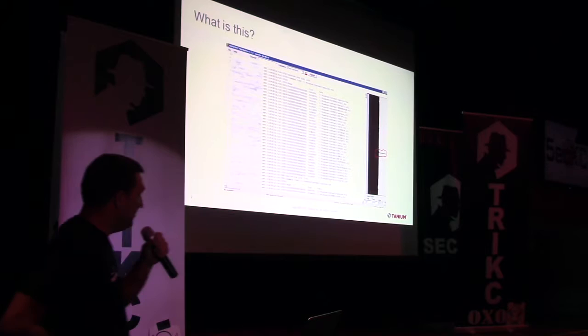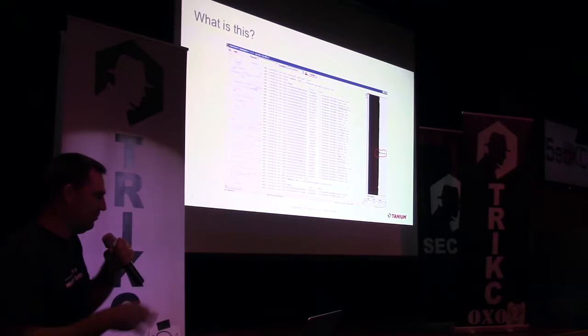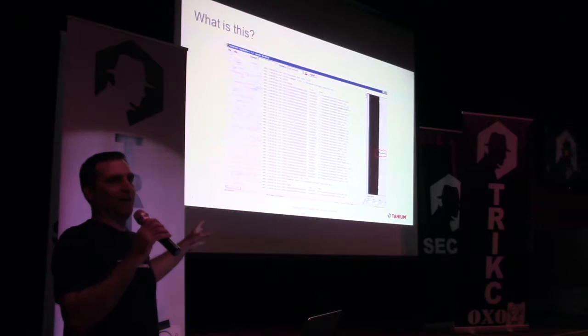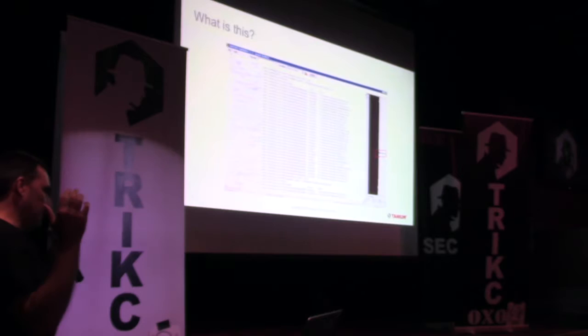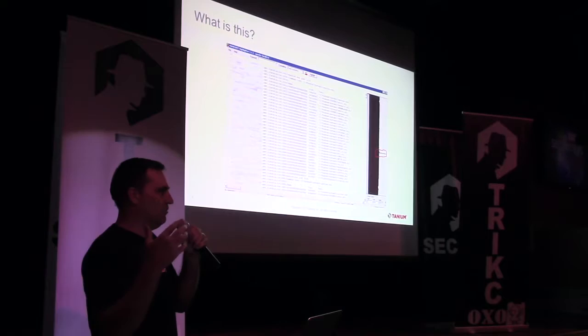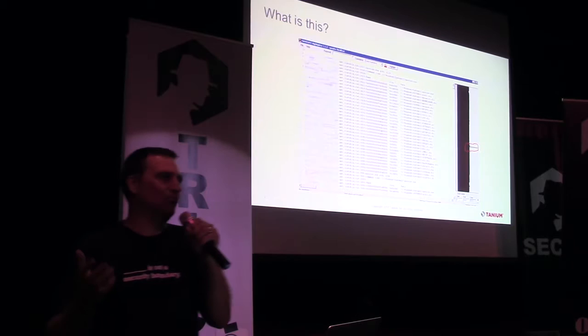This is a slide I showed here last summer when I was talking about KANSA, which is an open source framework I wrote for doing security incident response work. What this slide shows is a persistence mechanism we caught in Office 365 when I was working at Microsoft. Microsoft is really big on red team, blue team engagements — they were doing it the four years I worked there, continuously red teaming the service. There was a team of dedicated people trying to break into Office 365 and basically do what nation-state adversaries would do.